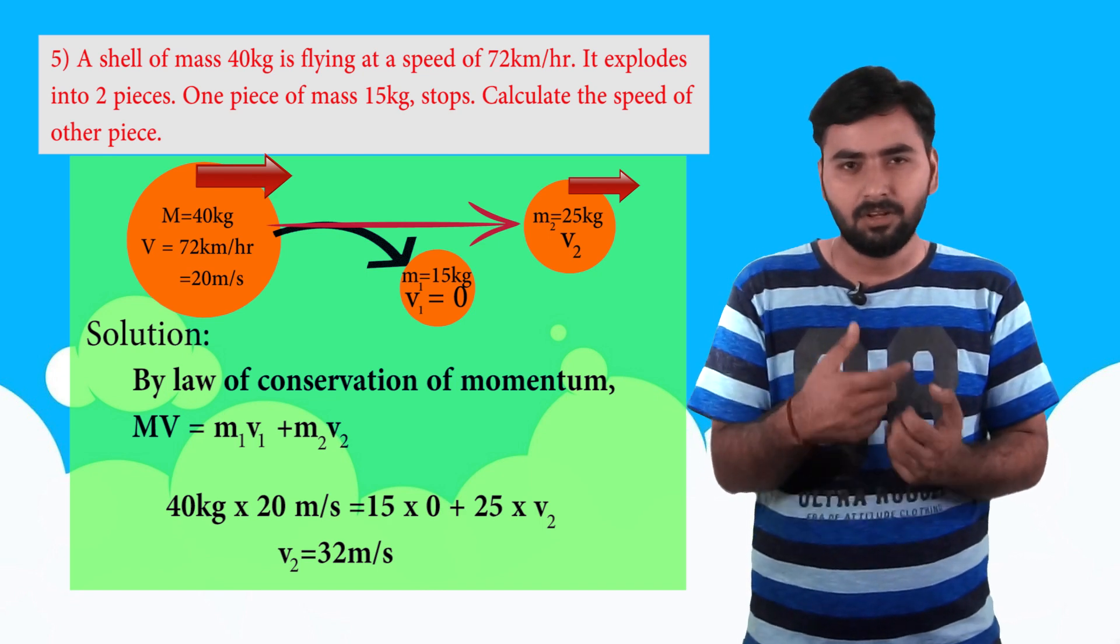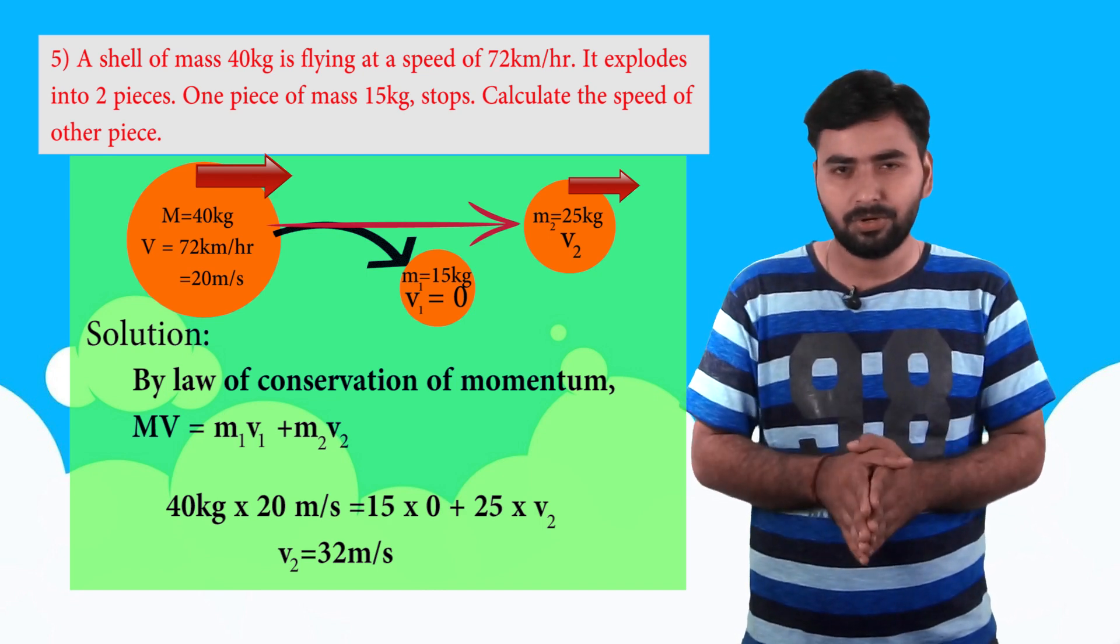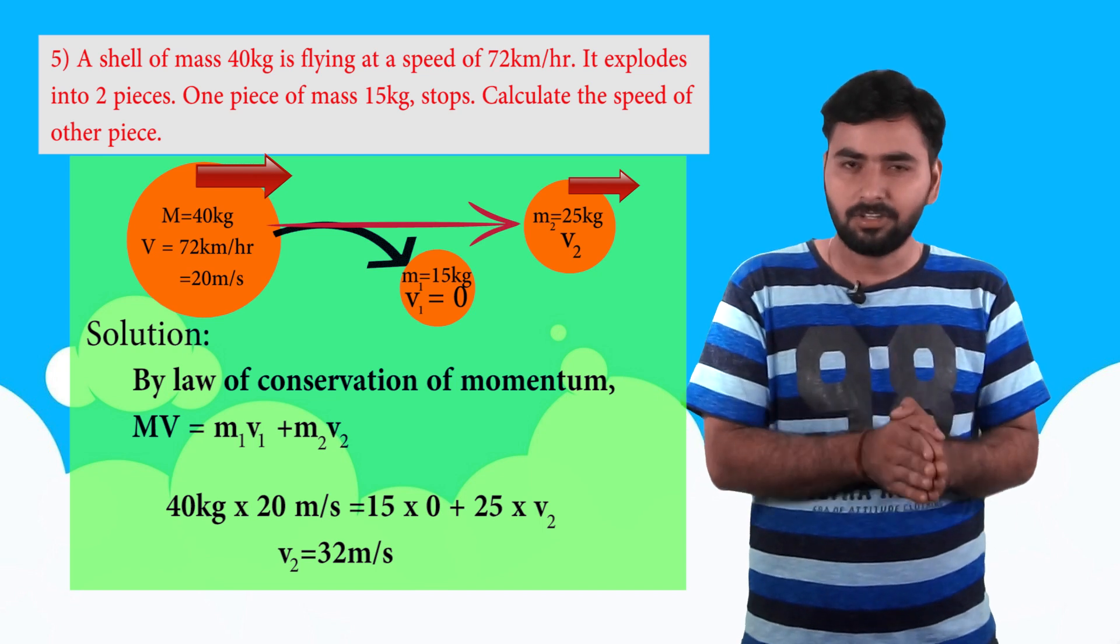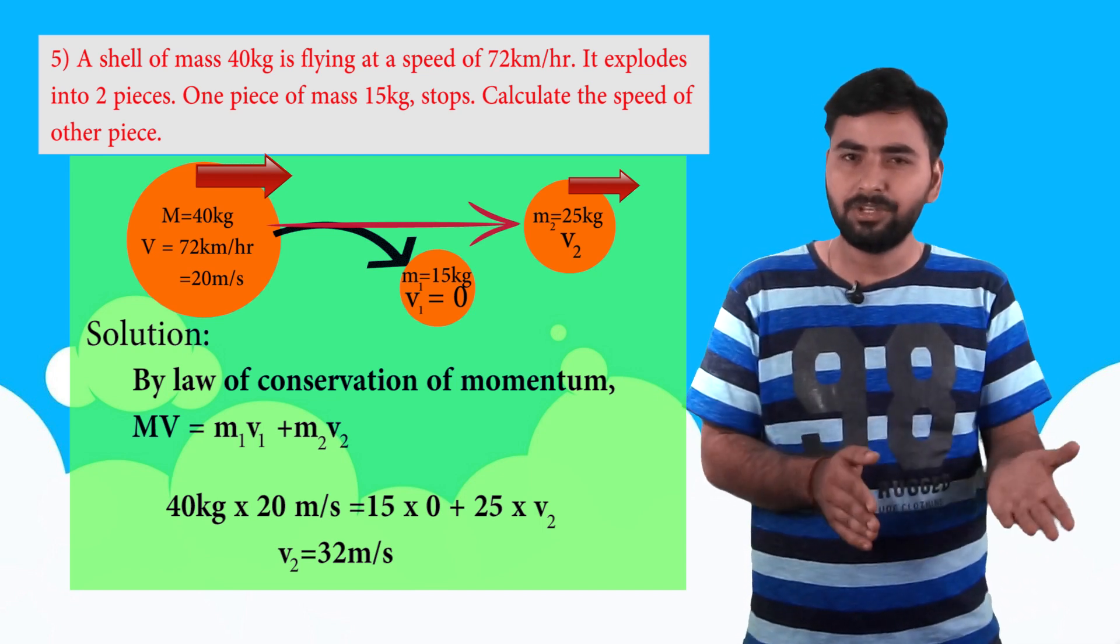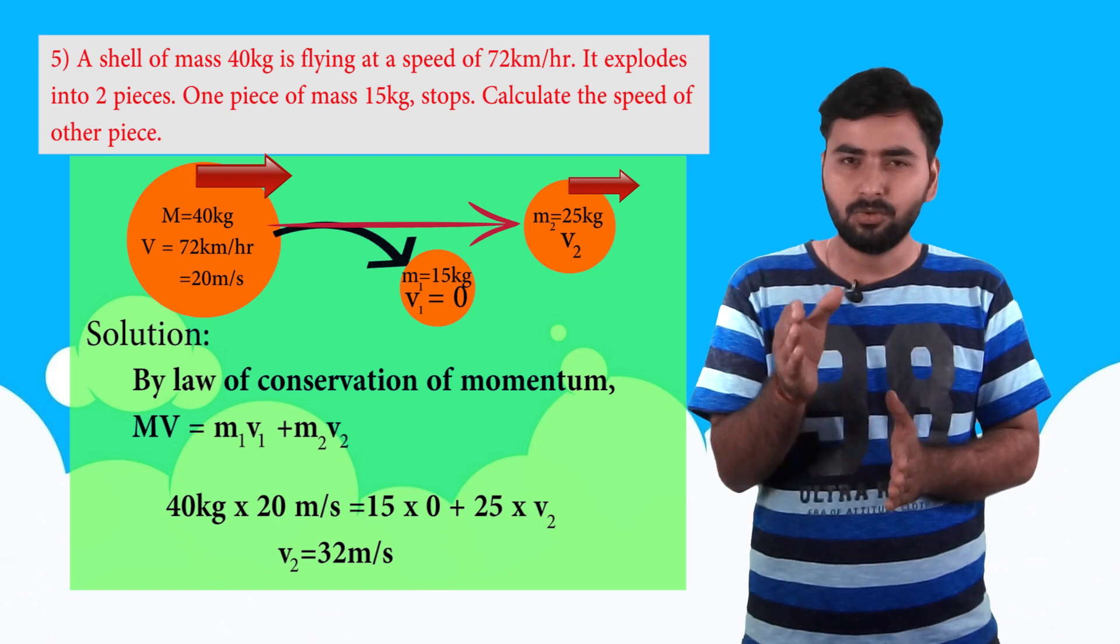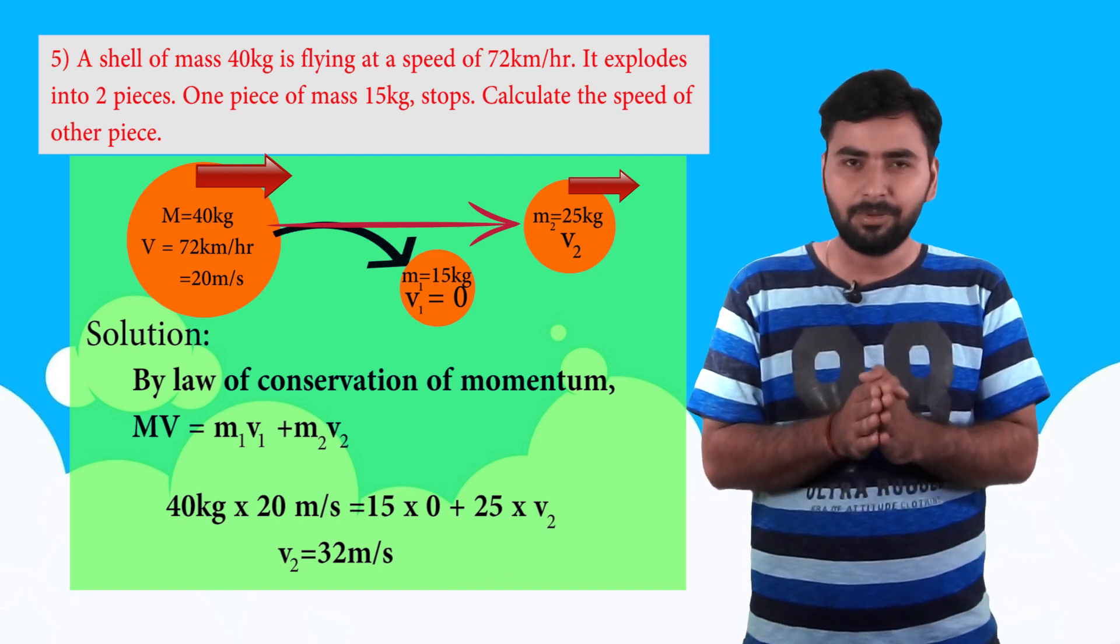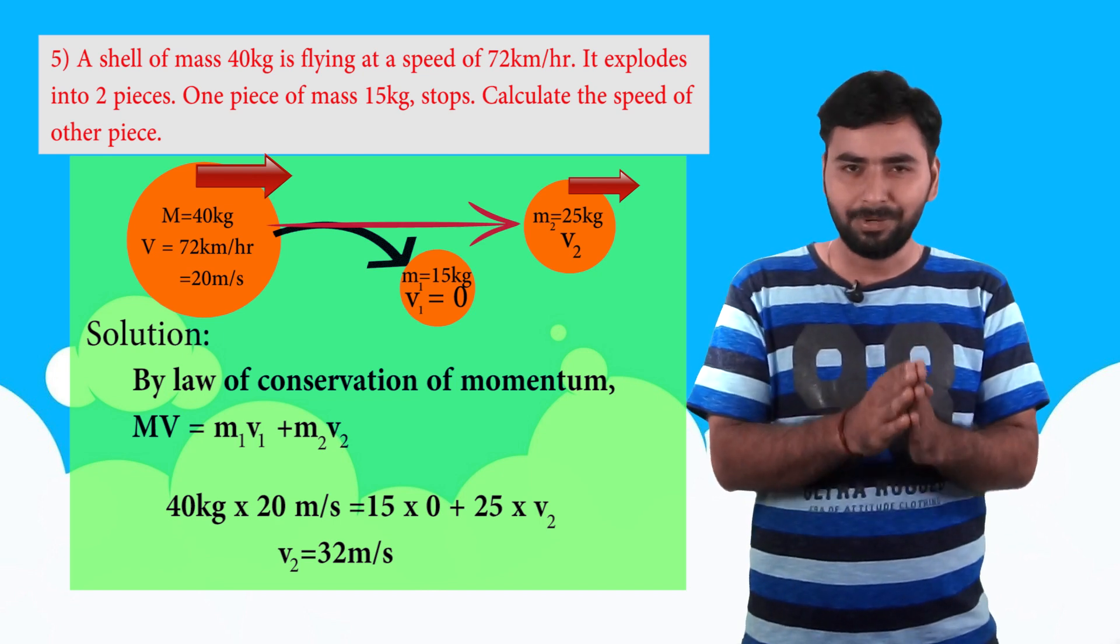The first term M1 V1 is zero, so the whole term becomes zero. So that is 40 into 20 is equal to 25 into V2. V2 is equal to 40 into 20 upon 25, which is coming out to be 32 meter per second.